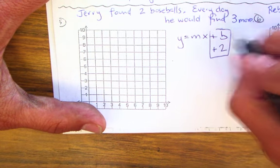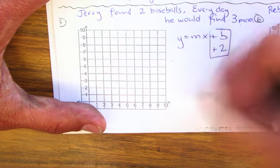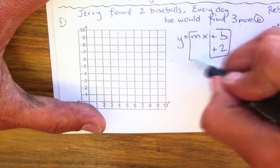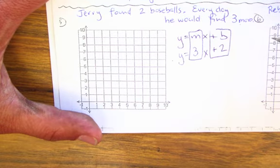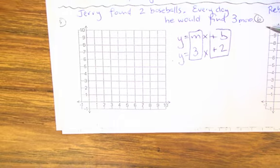And then three more basically every day. So that's your growth. Every day there's three more. So 3x. So y is equal to 3x plus 2. Got it? Pretty easy, right?